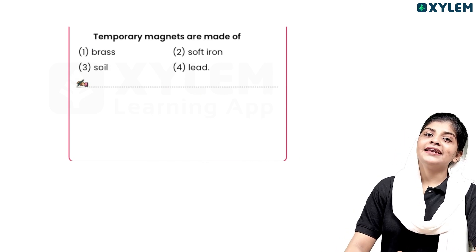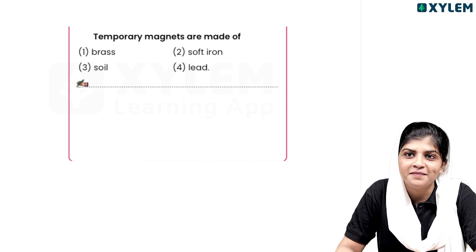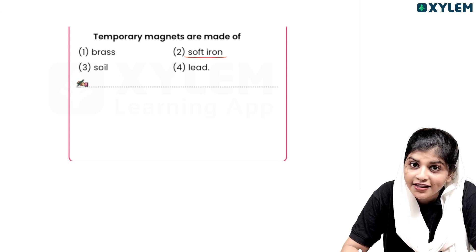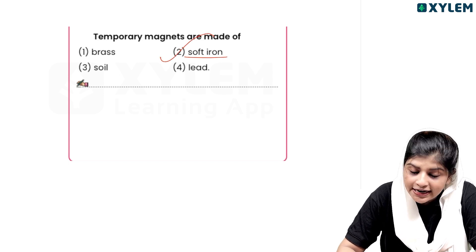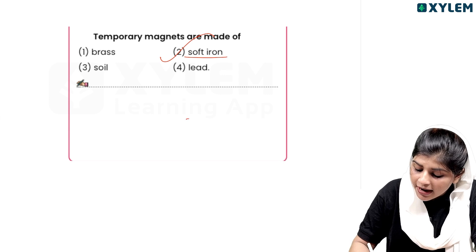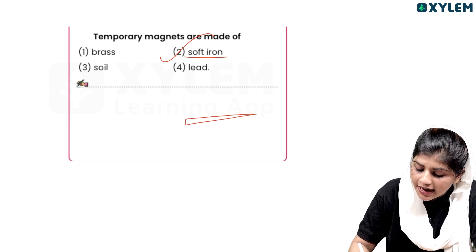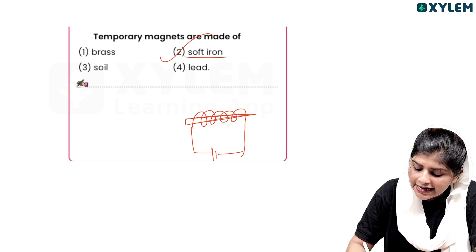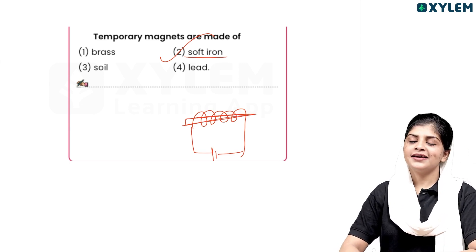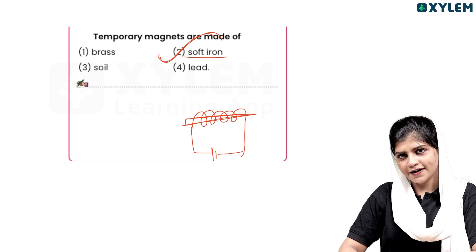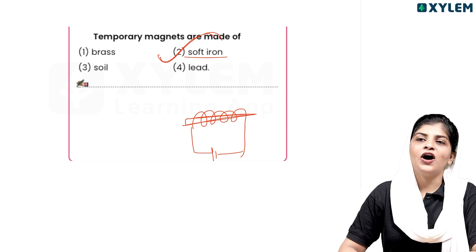Temporary magnets are made of soft iron. Electromagnets are made of temporary magnets.